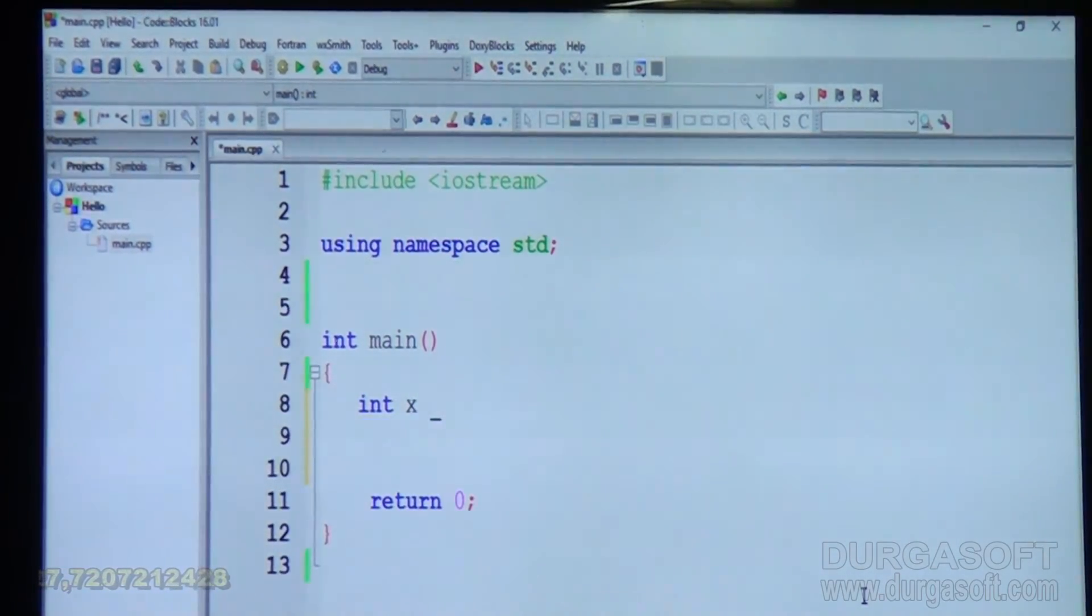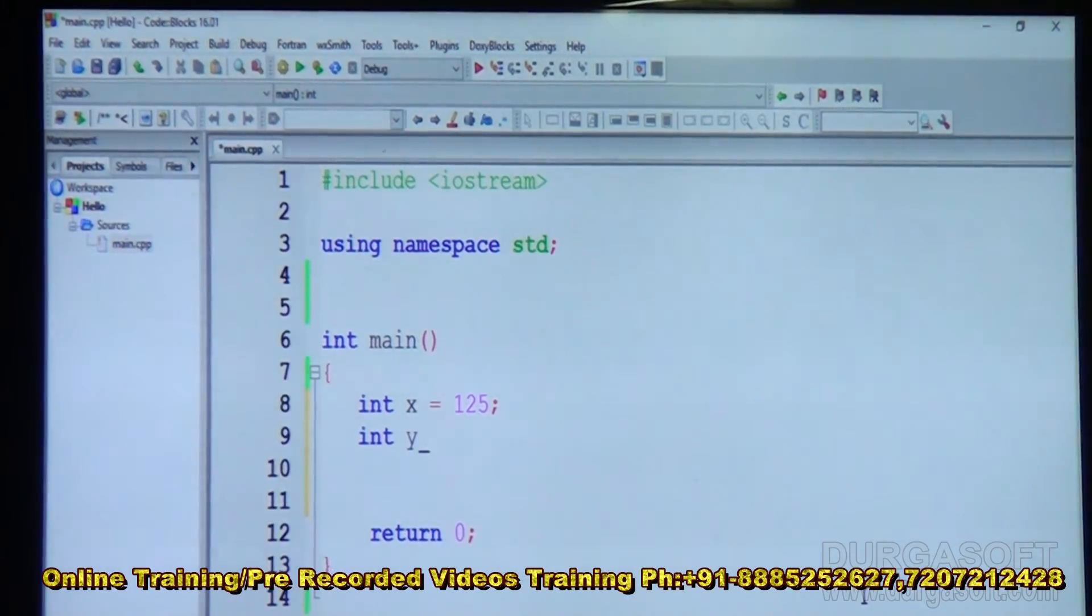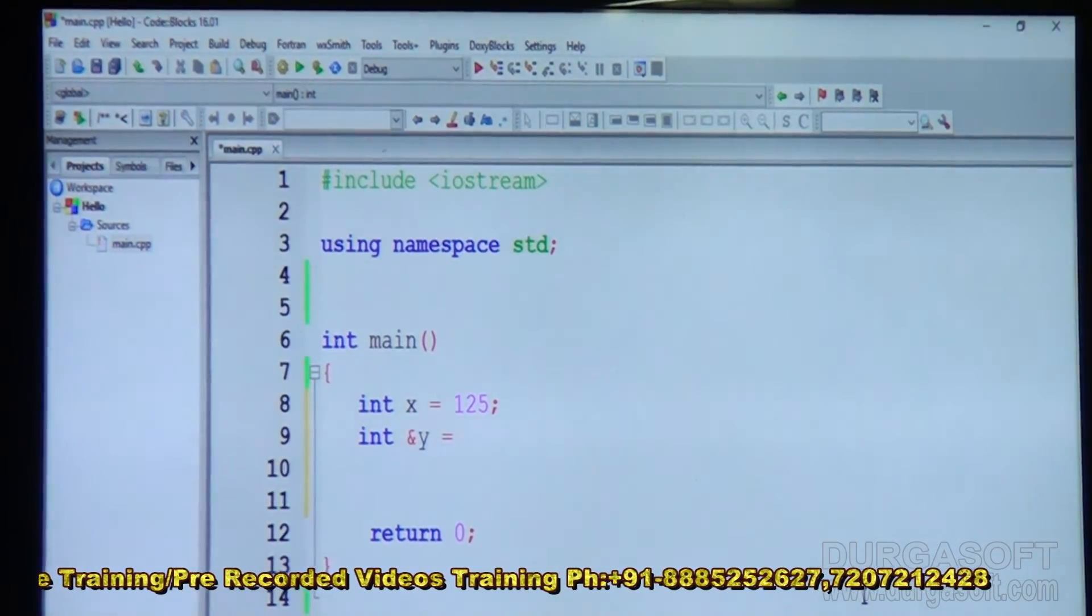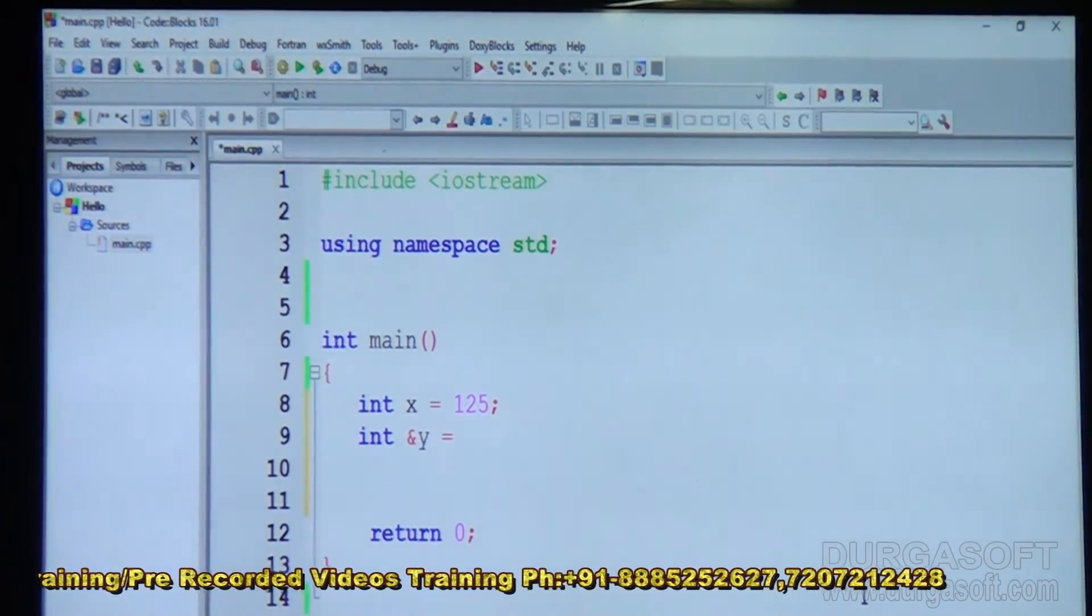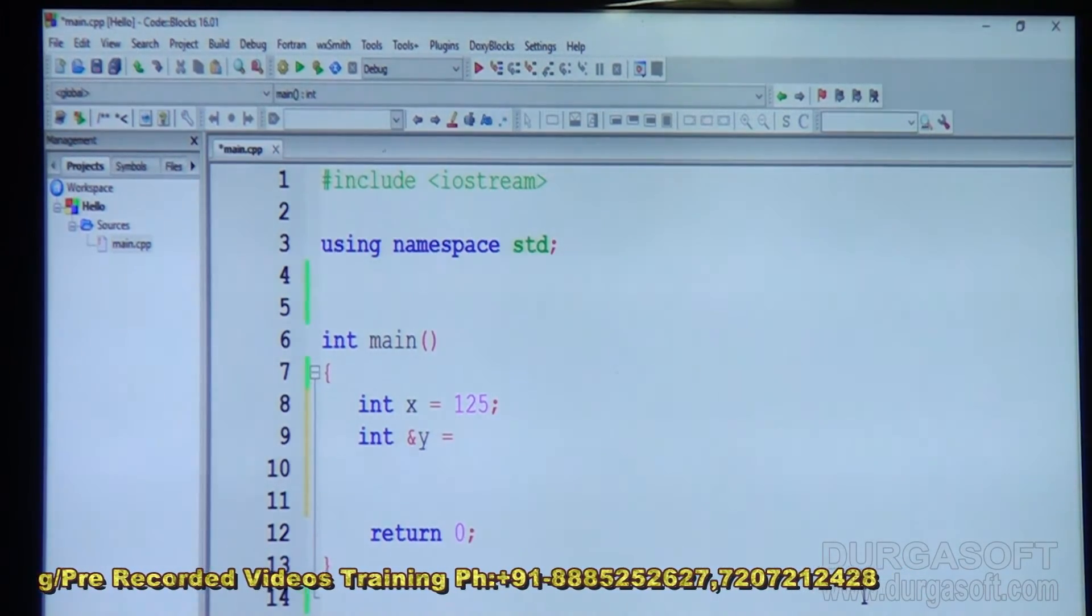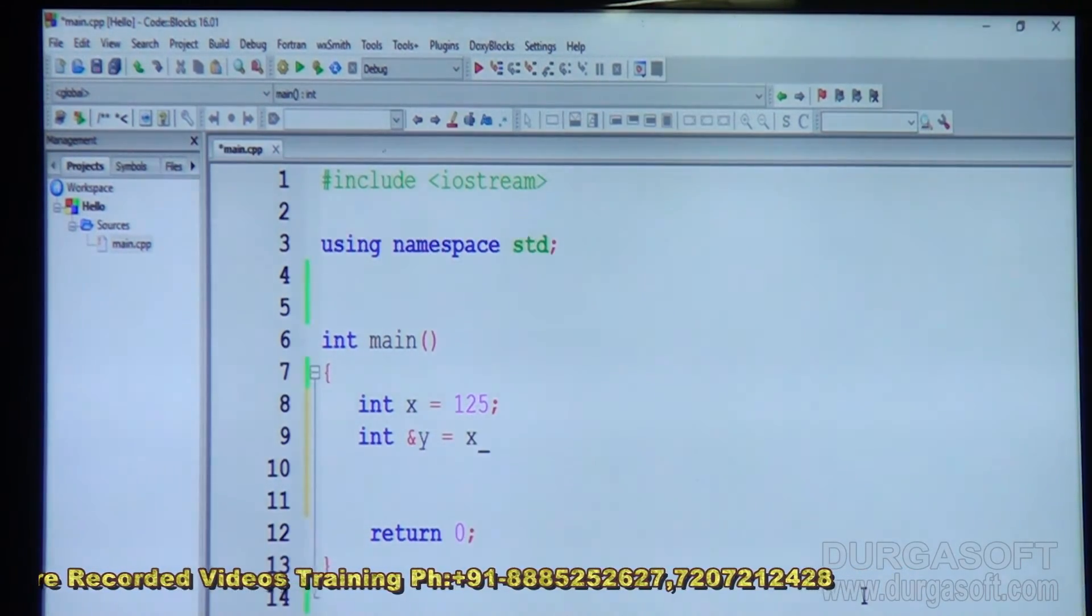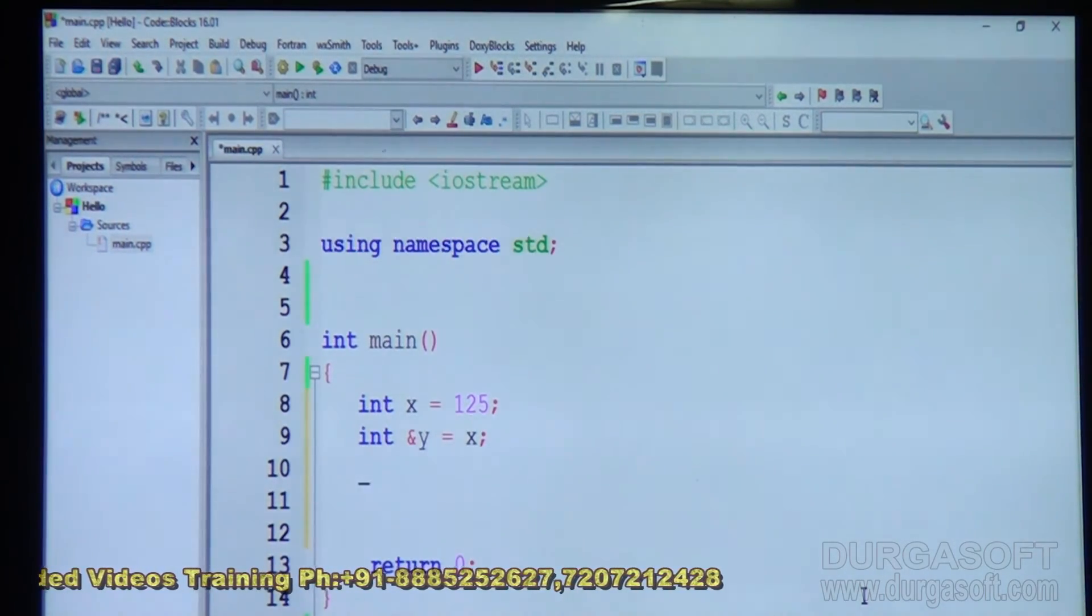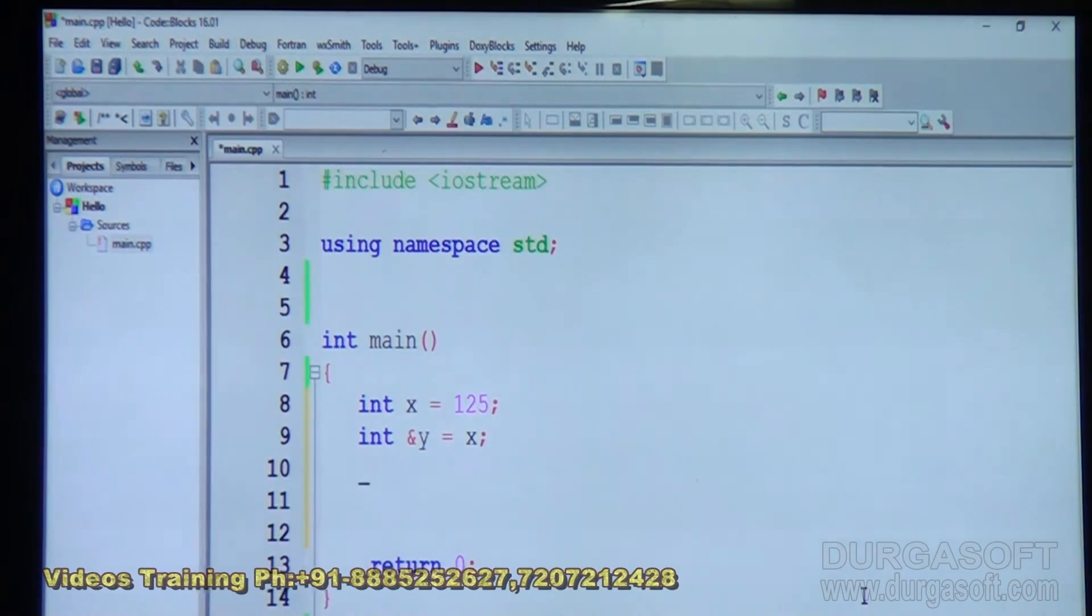Int x is equal to 125. Now let us have a reference for this. Int y. Int reference y. Integer reference. So int reference y means y is an integer reference. Another integer can be assigned to this. Is equal to x. So y is reference of x. It is declared like this. Int reference y. Or you can do separately also. Int reference y is equal to x.